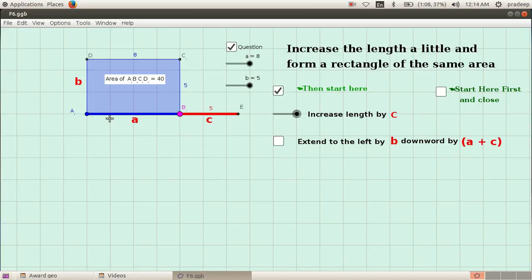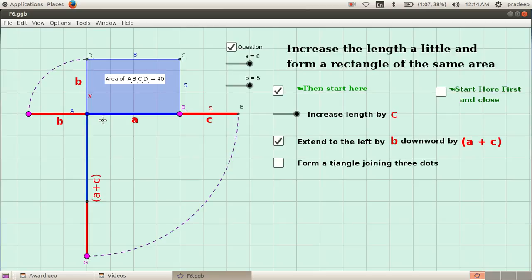This is equal to b, the breadth of this rectangle. This line is extended downward with a length equal to the sum of these two, that is a plus c. A plus c is the length of this downward extended straight line segment.